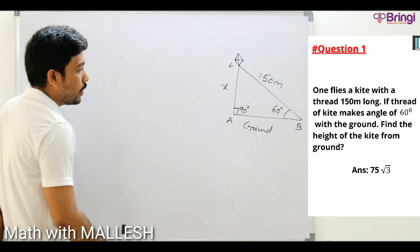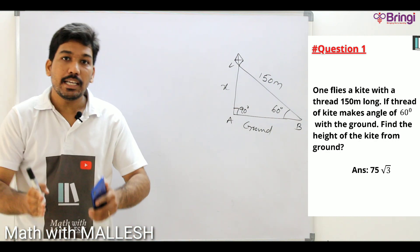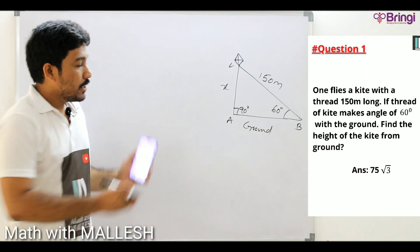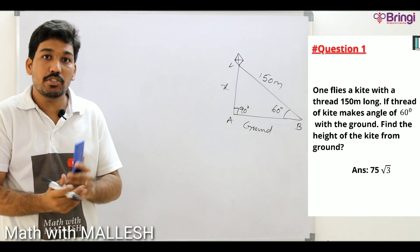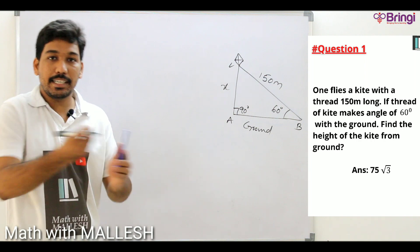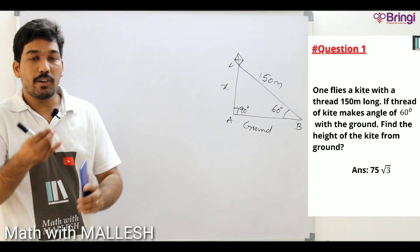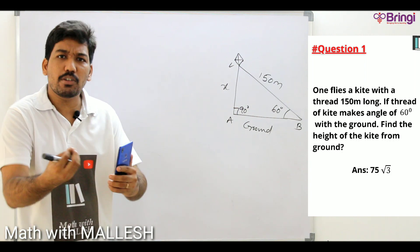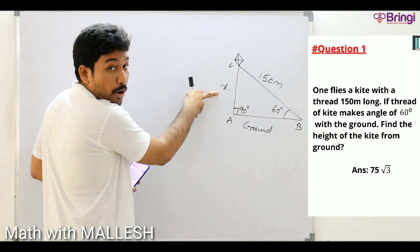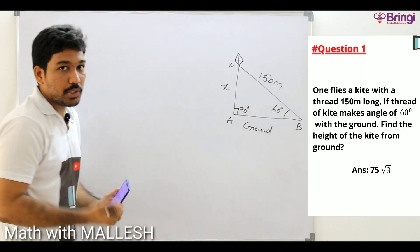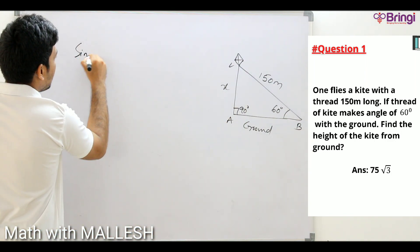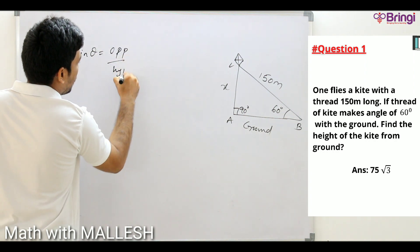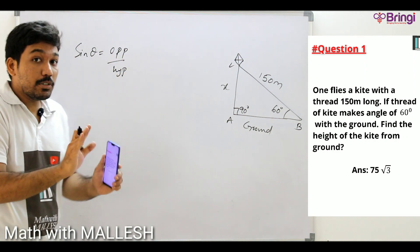First of all, if you are new to trigonometry, this is not the right place to jump straight into heights and distances. You should have basic knowledge of trigonometry — what is sine theta, cos theta, tan theta, and values like sin 60, cos 60, tan 60. Here we have opposite and hypotenuse, so we apply sin theta, which equals opposite divided by hypotenuse.